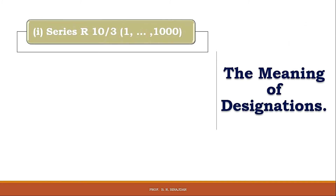Consider the notation R10/3 (1 to 1000). This indicates a derived series comprising every third term of the R10 series, with a lower limit of 1 and an upper limit of 1000. Whatever values appear in brackets represent the lower and upper limits, and between these limits we derive the series by selecting every third term from R10.